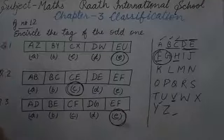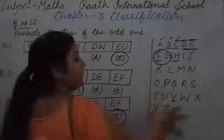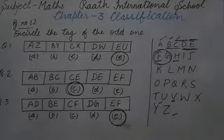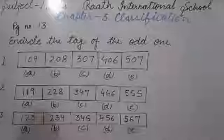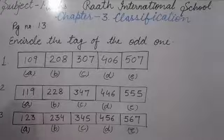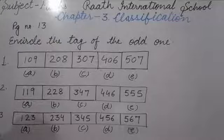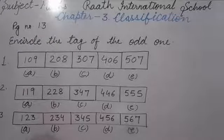So like that you will do the rest of this page also. The rest part you will do yourself — in a rough notebook write A, B, C, D and then easily you can find which one is different. After that we will do the next page, page number 13. Circle the tag of the odd one — same like page 12, but here numbers are given instead of alphabets.